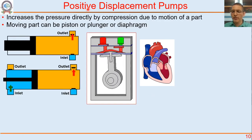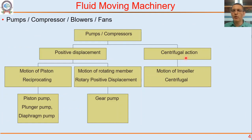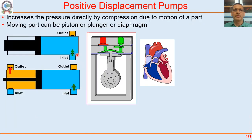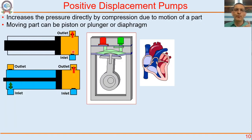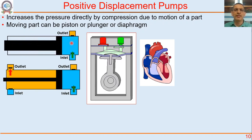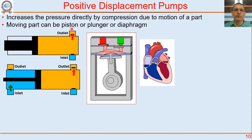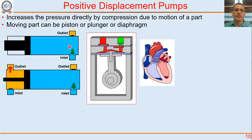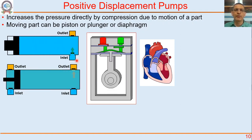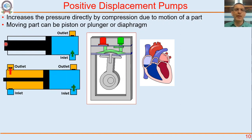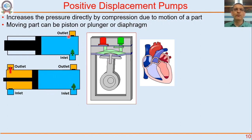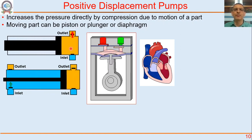Now let us come to the next category. We have talked about centrifugal action. Now let us come to positive displacement. Like a bicycle compressor — when this piston moves forward it pressurizes and high pressure air goes out. When the piston moves to the left, suction is developed, the inlet valve opens and air comes in from outside. This is happening by the positive displacing action of the piston — therefore these are called positive displacement. They directly increase the pressure.